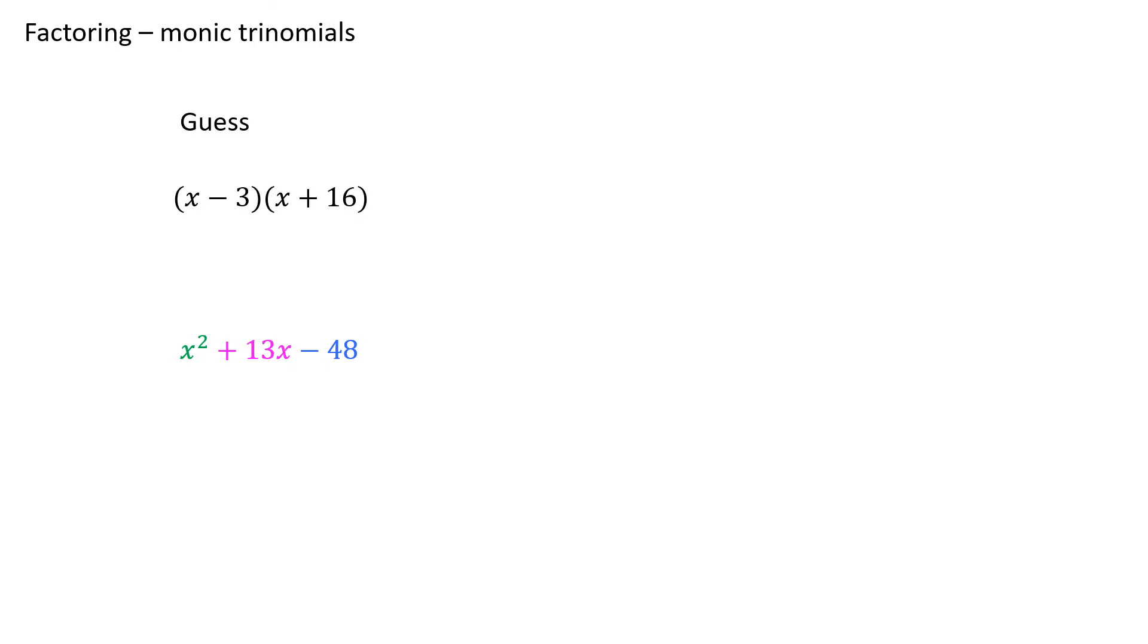And we're going to keep guessing until we get lucky enough to get it right. Hopefully, the third time will be the charm here. Let's go through. Let's take this guess. x times x is x squared. Negative 3 times 16 is negative 48.